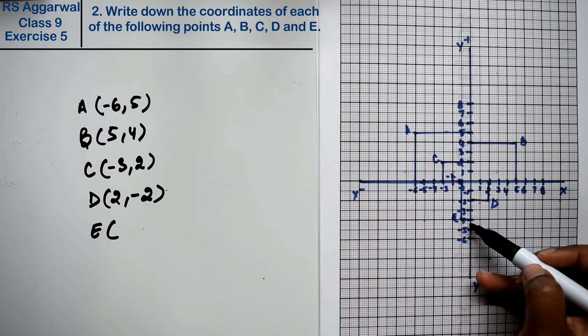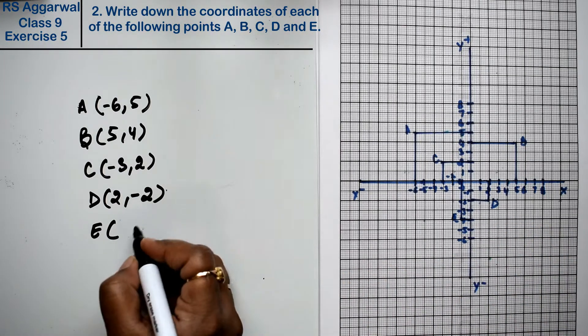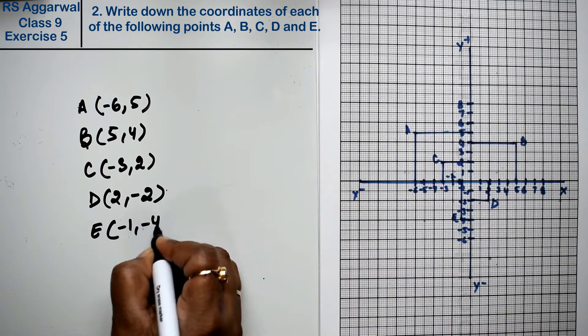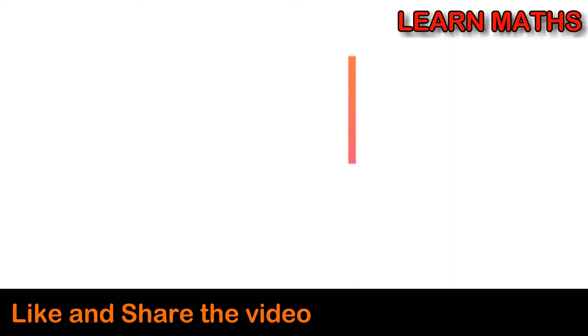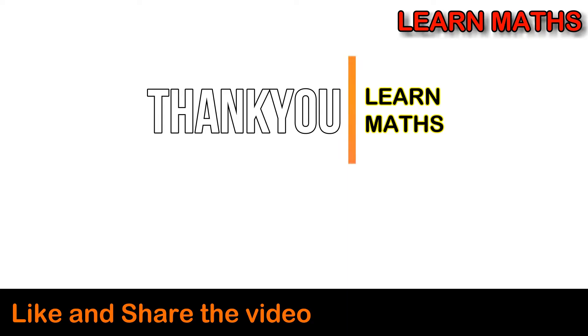E point, where is X and Y. Minus 4 and minus 4 is the answer. Thank you. If you understand the step by step solution of this video, please subscribe my channel Learn Maths and share it with your friends. Thank you.